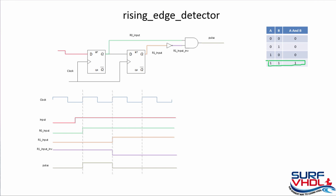Looking at the truth table of the AND gate, the output is one when both inputs are one. So the output pulse is one when the input of the AND gate is one — meaning the output goes high for one clock cycle, detecting the rising edge of the input.